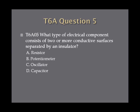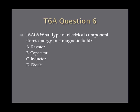Question 5: What type of electrical component consists of two or more conductive surfaces separated by an insulator? A, resistor. B, potentiometer. C, oscillator. Or D, capacitor. Question 6: What type of electrical component stores energy in a magnetic field? A, resistor. B, capacitor. C, inductor. Or D, diode.